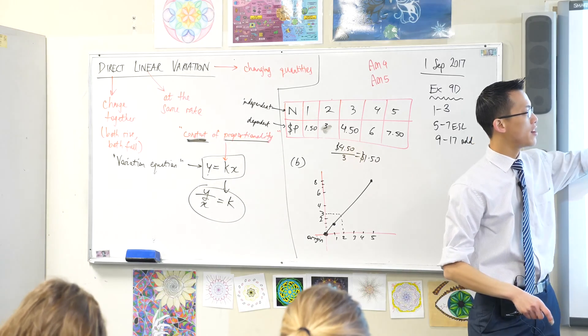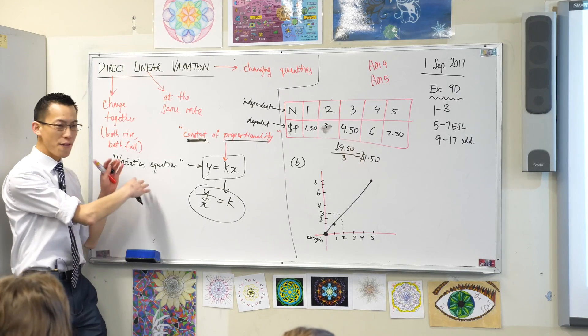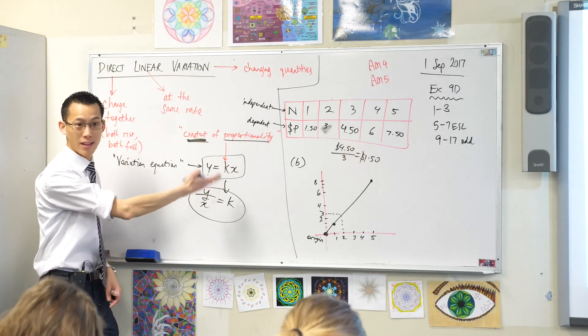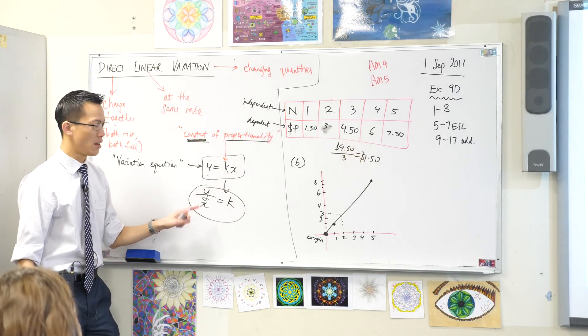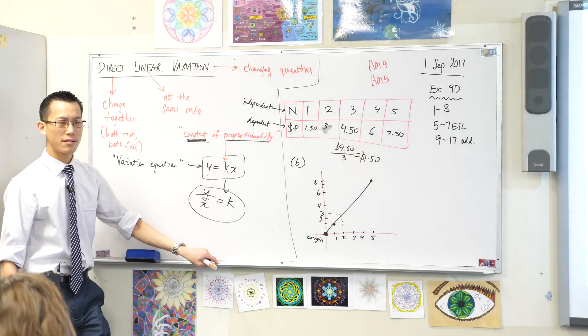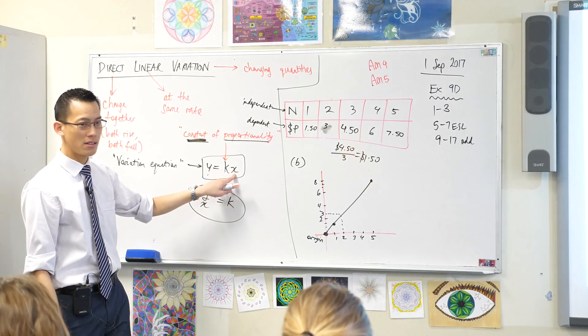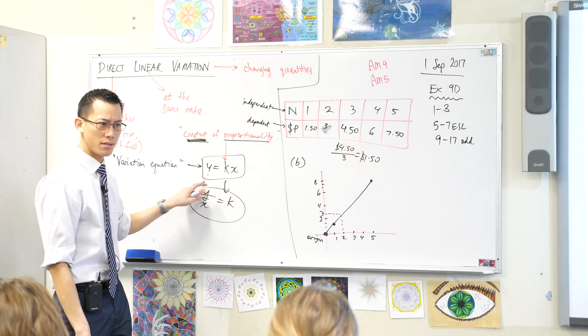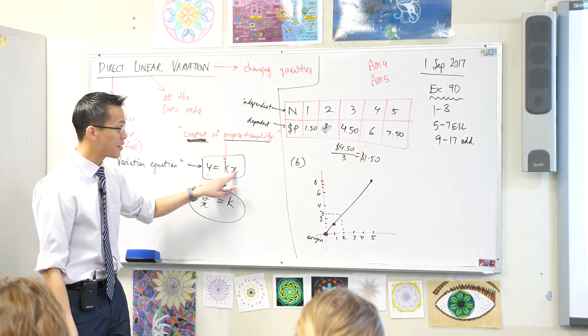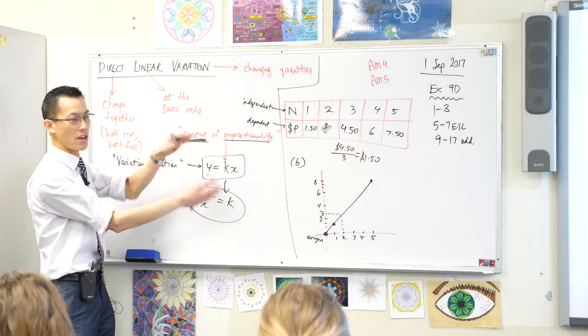Write the linear equation for P in terms of N. Okay, so remember over here I said every variation equation will look like this, just with the appropriate choices of pronumeral. So which one's X and which one's Y? X will be the number of pencils because X is what we usually label as the independent variable on which the other one depends.